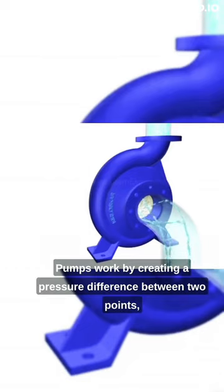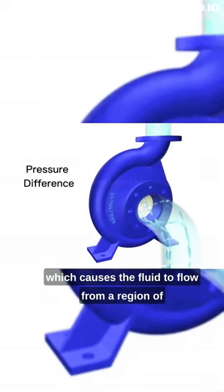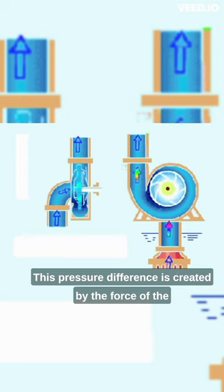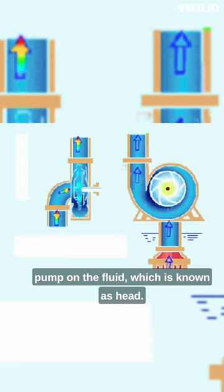Pumps work by creating a pressure difference between two points, which causes the fluid to flow from a region of high pressure to a region of low pressure. This pressure difference is created by the force of the pump on the fluid, which is known as head.